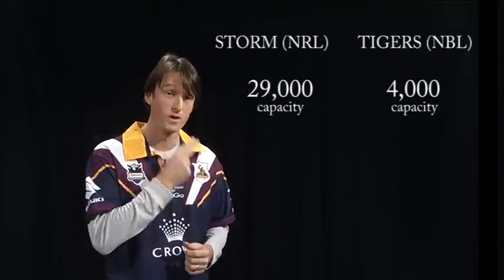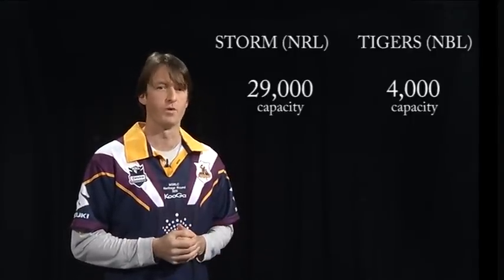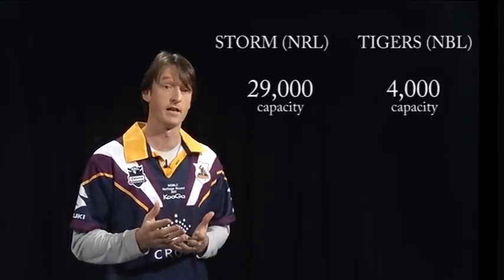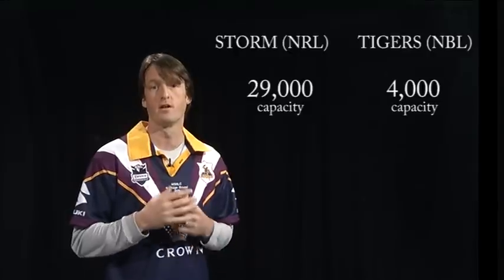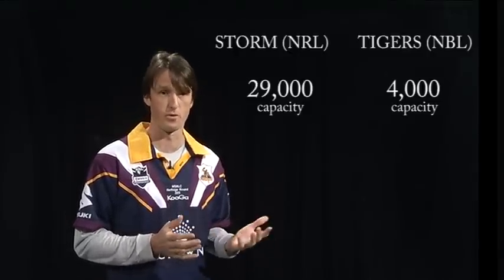Melbourne Storm, in the NRL, they play at Rectangular Stadium with a capacity of 29,000. And the NBL's Melbourne Tigers, who play at the State Netball Hockey Centre, capacity 4,000.